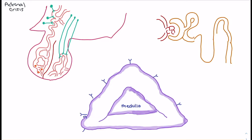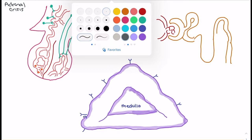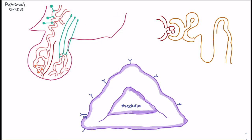We need to start with the hypothalamus and the role it plays with the anterior pituitary gland in releasing ACTH, or adrenocorticotropic hormone. When looking at adrenal crisis, we're talking about alterations in the adrenal hormones of CRH, ACTH, and then the mineralocorticoids and glucocorticoids that are released as a result.